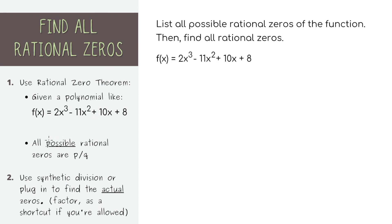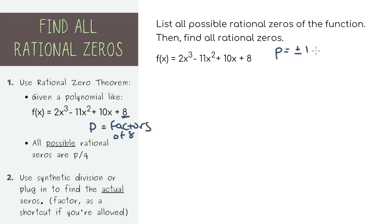The rational zero theorem says that you can find all of the possible rational zeros by dividing p and q. We're defining p as all of the factors of the constant in the polynomial, so in our case it's 8. When we write all of the factors, it's going to be plus or minus 1, plus or minus 2, plus or minus 4, and plus or minus 8. These are all of the numbers that you can multiply to get 8.